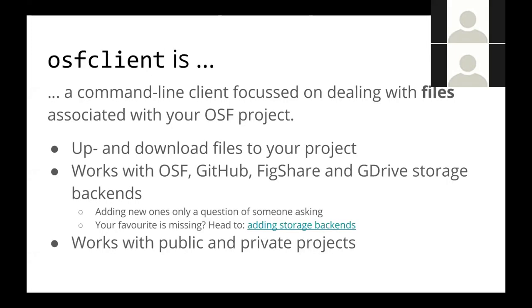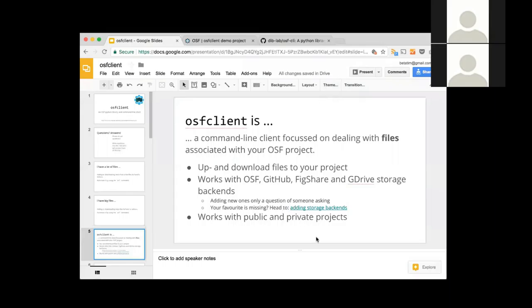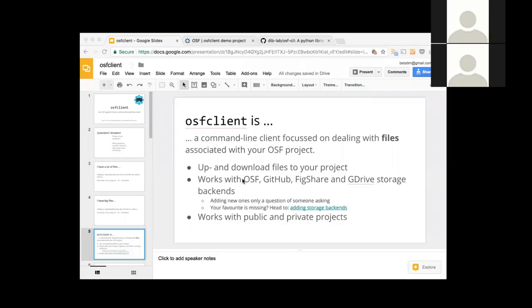Especially in particle physics or genomics, you very quickly have very big files. If you have a file that's several gigabytes large, uploading or downloading it through your browser is just tedious. That's where we've come from, which is why the OSF CLI is very focused on sending and fetching files. We got a question about the file upload size limit via the API — it's five gigabytes per file, which is also the upload limit through the website. OSF CLI itself doesn't impose any limits; whatever limit is built into OSF is the limit.